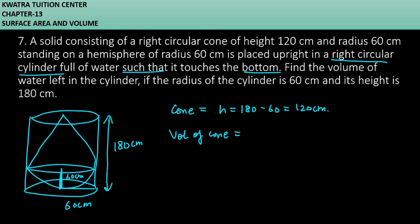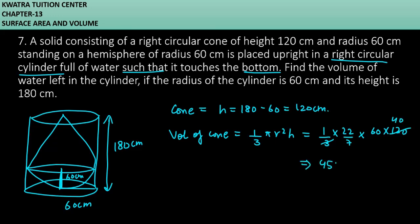First, we remove the cone. The volume of a cone is (1/3)πr²h. So, (1/3) × (22/7) × 60² × 120. Simplifying this gives us 452,160 cm³.